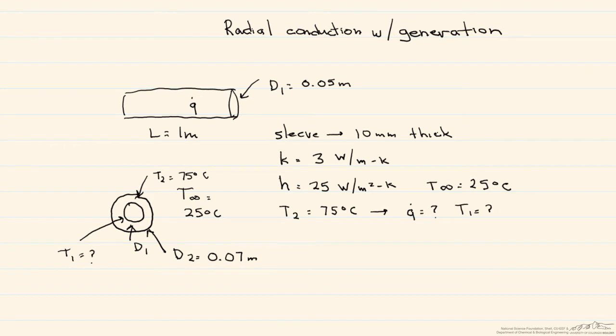There are generally two different approaches you can use when solving radial systems with heat generation. You can do an overall energy balance, or you can use the thermal circuit approach. However, you have to be very careful when you use that thermal circuit approach, as you can only use it where the heat transfer rate stays constant. In other words, your generating medium cannot be part of the circuit.